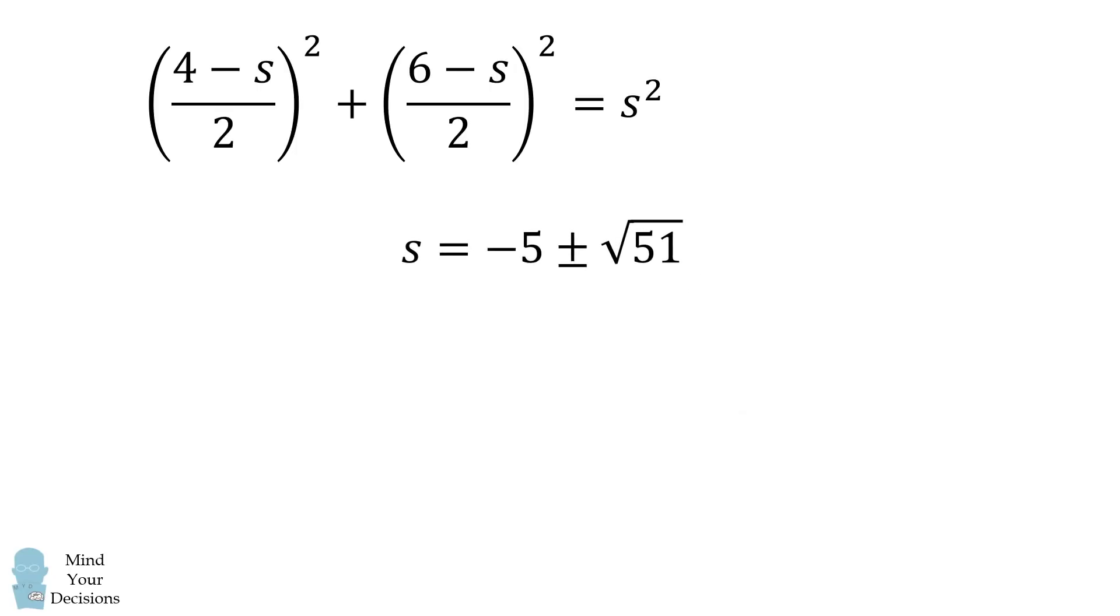But remember, S is a side length, so we want S to be greater than 0. So we'll reject the negative solution, and we get S is equal to negative 5 plus the square root of 51, which is approximately 2.14, and that's the answer.